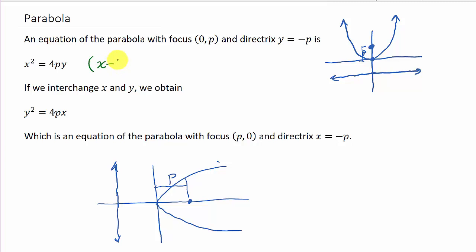But if we look at it, x minus h squared equals 4p times y minus k, and then here we would have y minus k squared equals 4p times x minus h, and the vertex would be h, k.